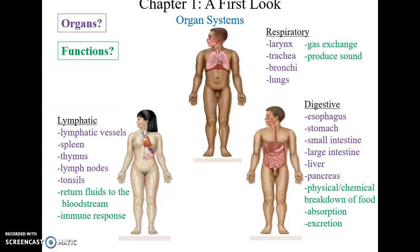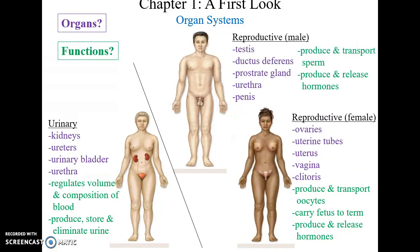The digestive system includes many organs such as the esophagus, stomach, small intestine, large intestine, liver, and pancreas. It physically and chemically breaks down food, absorbs the broken-down nutrients, and excretes anything not used.